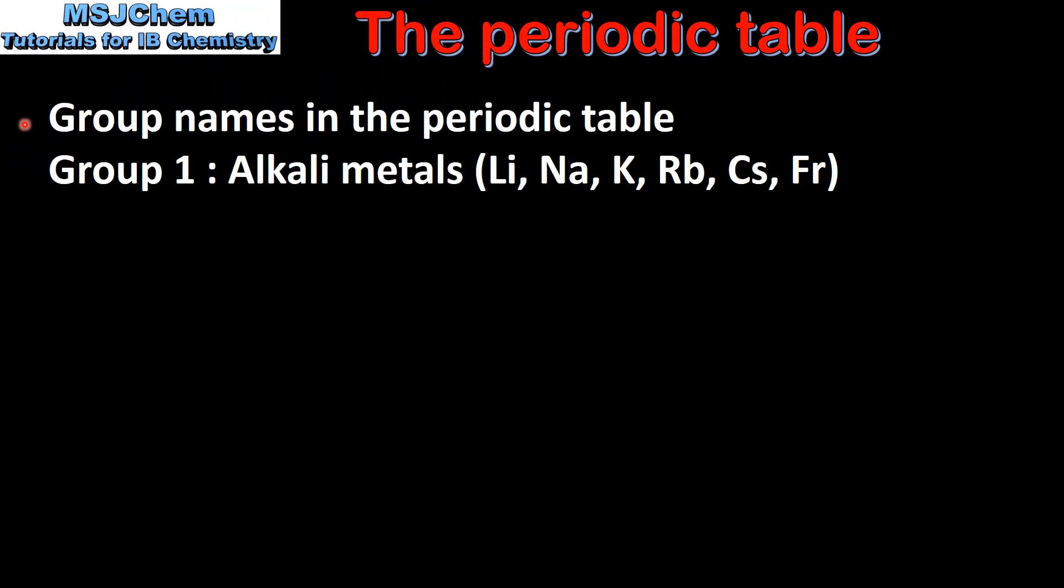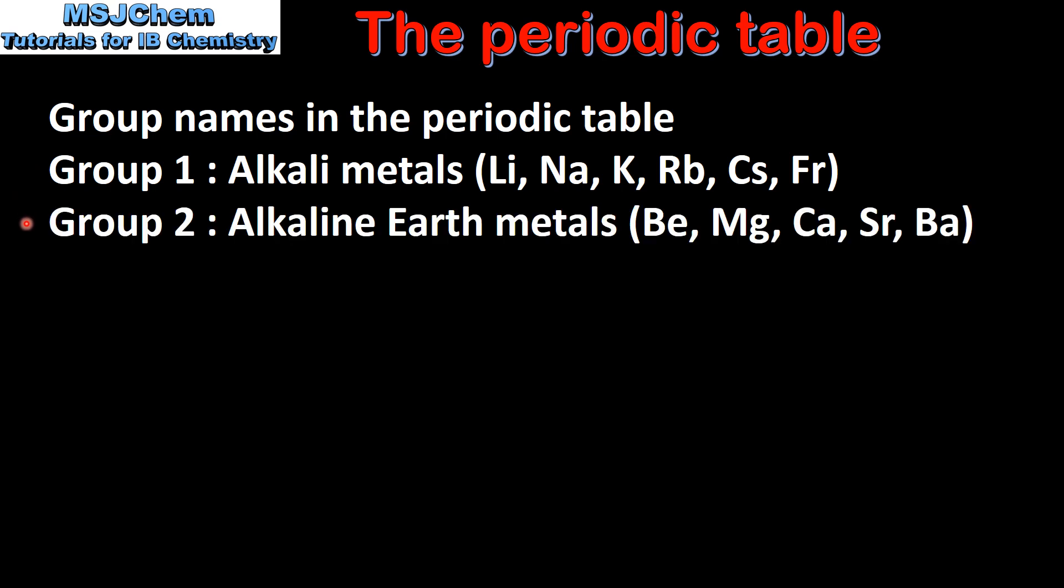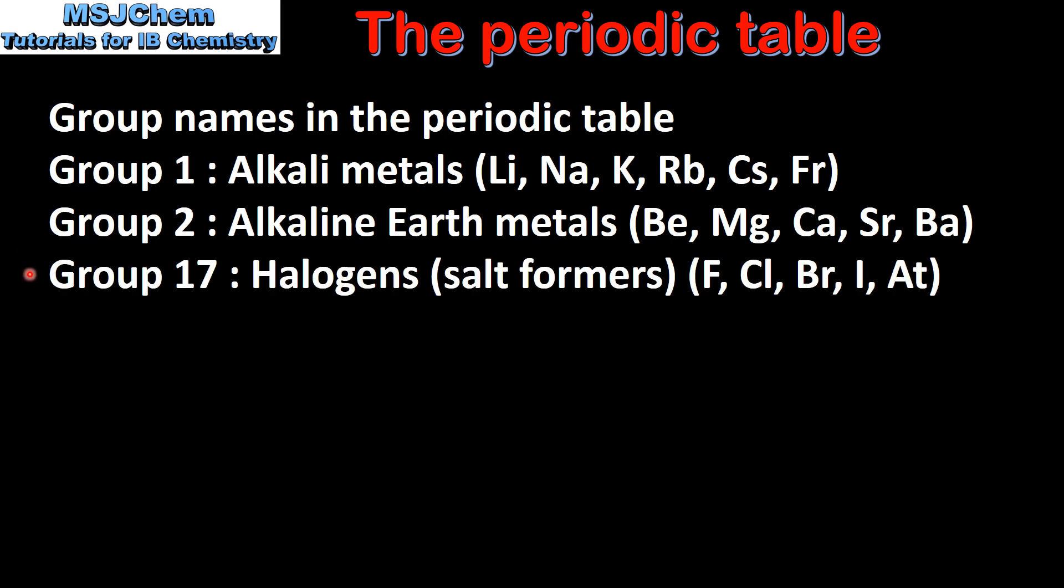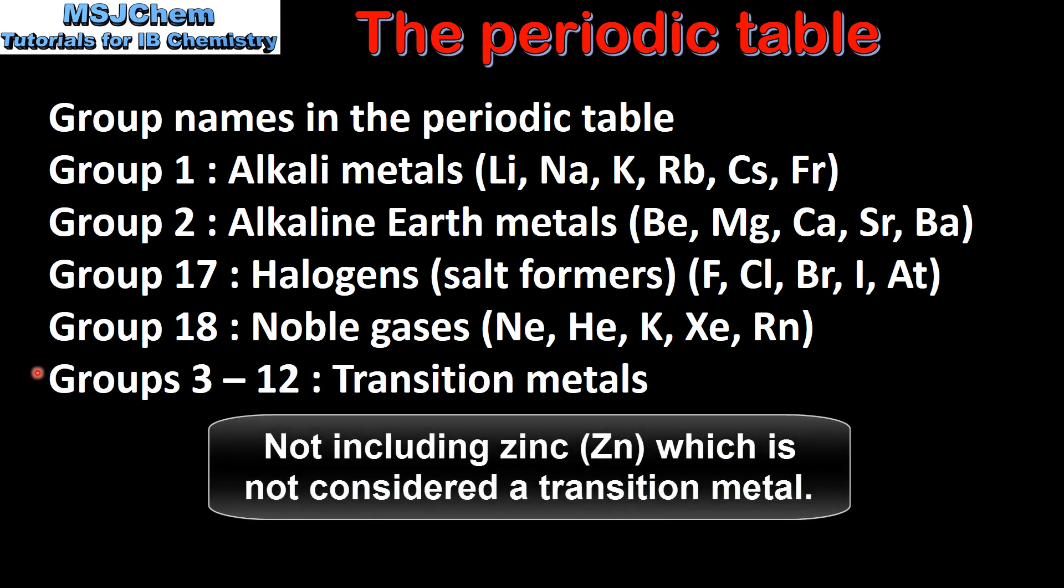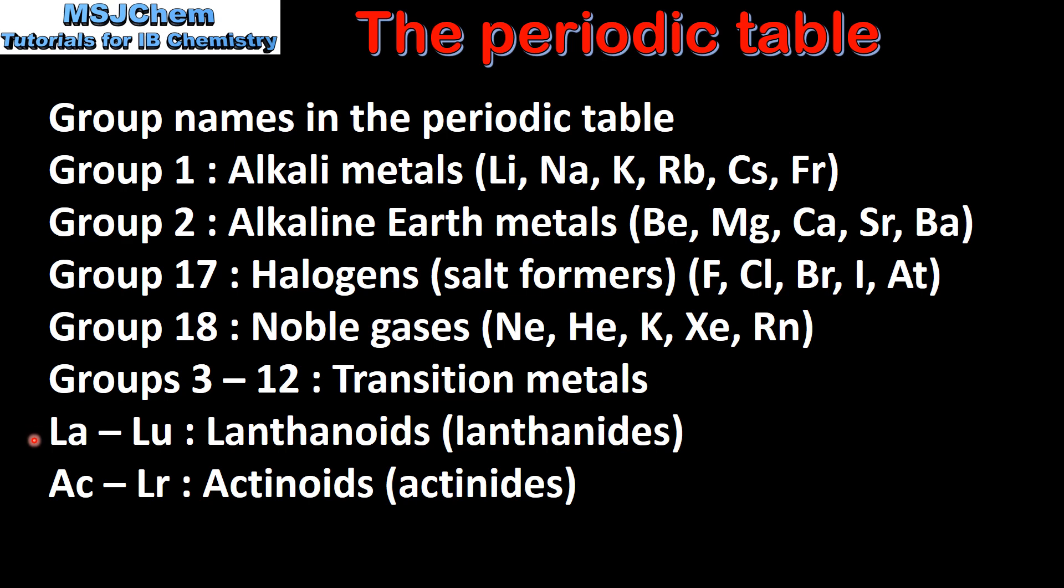And finally we look at the group names in the periodic table. Group 1 is also known as the alkali metals. Group 2 is the alkaline earth metals. Group 17 are the halogens. Group 18 the noble gases. Groups 3 to 12 are the transition metals. And finally we have the lanthanoids and the actinoids.